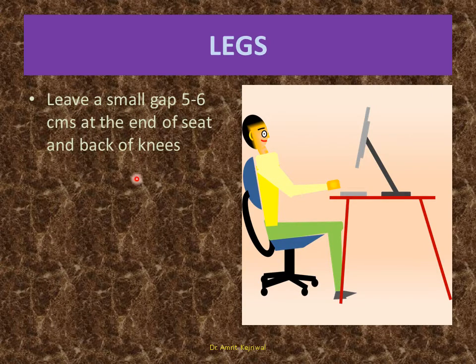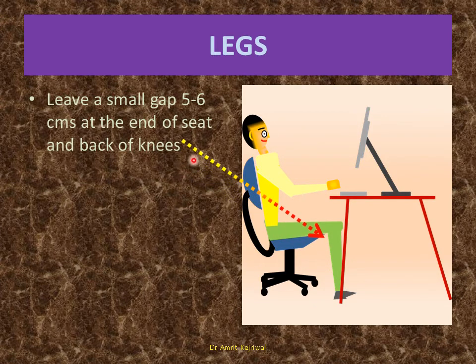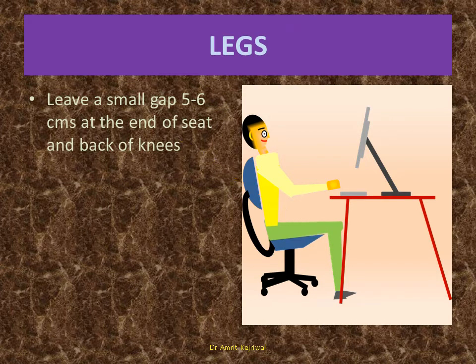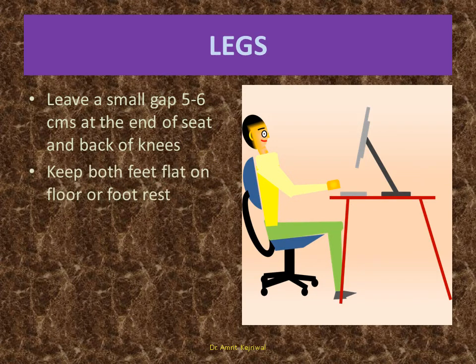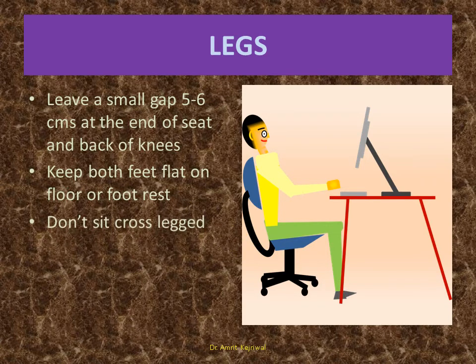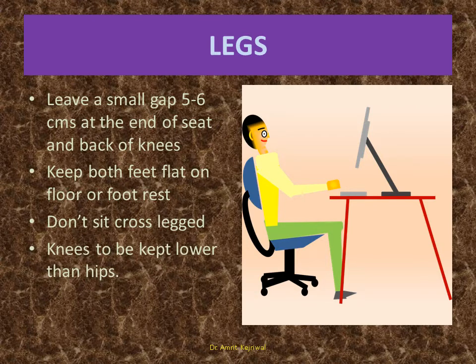Legs: Leave a small gap of 5 to 6 centimeters at the end of the seat and back of the knees. You can see here this part. Keep both feet flat on the floor or footrest. Don't sit cross-legged and knees should be kept lower than the hips.